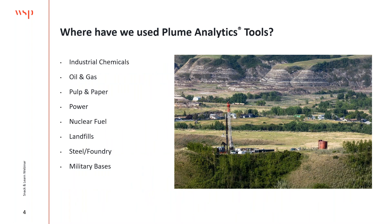These plume analytics tools are applicable to any site with groundwater data from which you can generate a contaminant plume. We've worked across many industries and contaminant classes — pulp and paper with creosote, naphthalene, PAHs, and pentachlorophenol; chlorinated solvents with parent-daughter sequences; even nuclear sites with gross alpha, gross beta, and technetium-99 in picocuries per liter. We also do sites with pH plumes and ORP plumes.